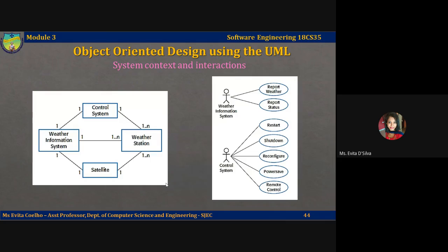The context model of a system may be represented using associations. Associations simply show that there is a relationship between the entities involved. You may therefore document the environment of the system using a simple block diagram showing the entities in the systems and their association. This figure shows that the systems in the context of the wilderness weather station are a control system, a weather information system, a satellite system, and a weather station. You can see which entities in this context are connected, shown by a link connecting them. There is also cardinality or multiplicity information on the link.